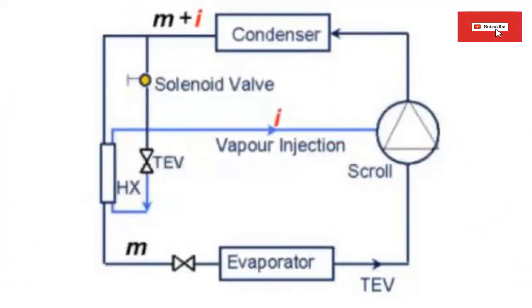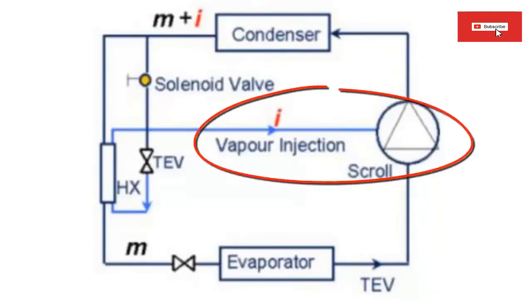1. The vapor injection installation is recommended for all scroll compressors used in low temperature applications. 2. Vapor injected scroll compressors are equipped with a connection for the operation of the economizer system.